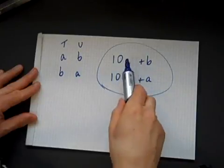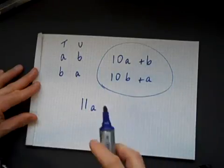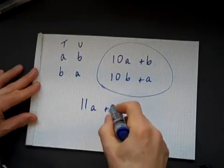And if I take all that together, I'm going to get 10A plus A, which is 11A, and 10B plus another B is 11B.